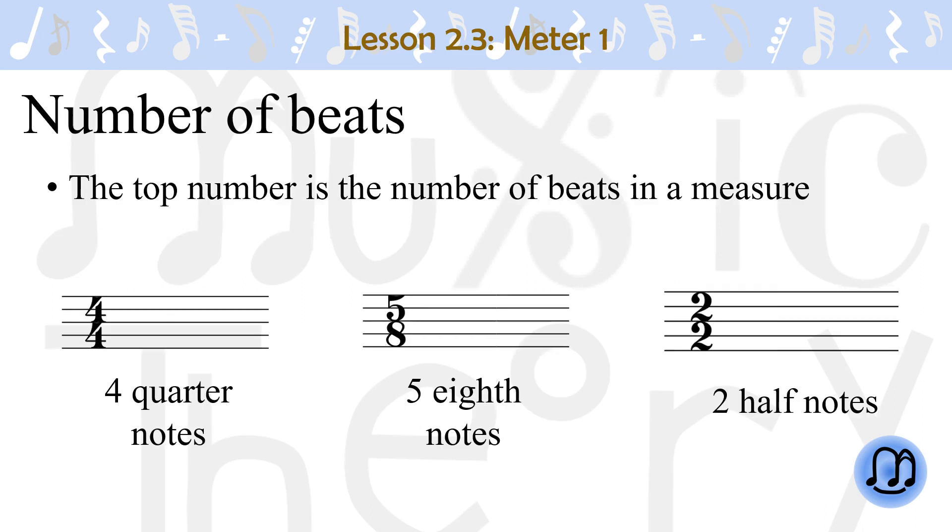In a time signature, the top number indicates the number of beats in a measure. In the picture on the left, there are 4 beats in one measure of 4-4. The middle picture shows that there are 5 beats in a measure of 5-8, and the picture on the right shows there are 2 beats in a measure of 2-2.